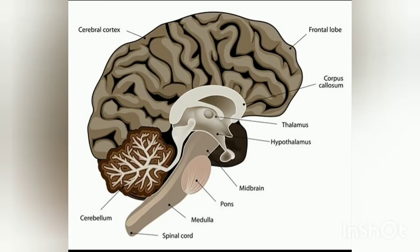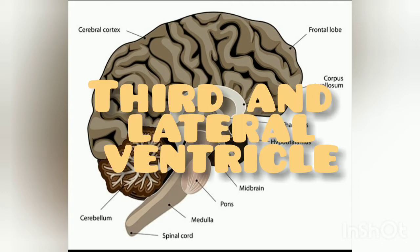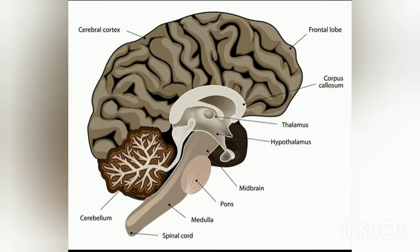The thalamus is a dorsal part of the diencephalon. It is a large mass of grey matter situated in the lateral wall of the third ventricle and in the floor of the central part of the lateral ventricle — that is, it is situated in both the third ventricle and part of the lateral ventricle.